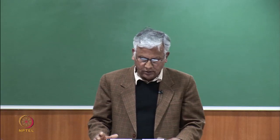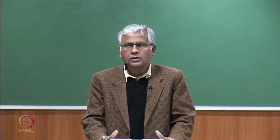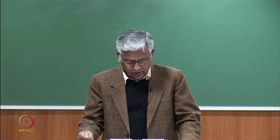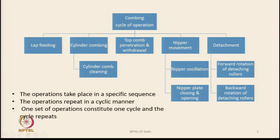There are certain operations in the machine which are performed in a cyclic manner. The cycle of operation consists of quite a few sub-operations: lap feeding, cylinder combing, top comb penetration and withdrawal, nipper movement, and detachment of the combed fringe. Further sub-operations under nipper movement are nipper oscillation — the nipper has to move backward and forward — and the nipper plates which close and open in order to grip the lap sheet.